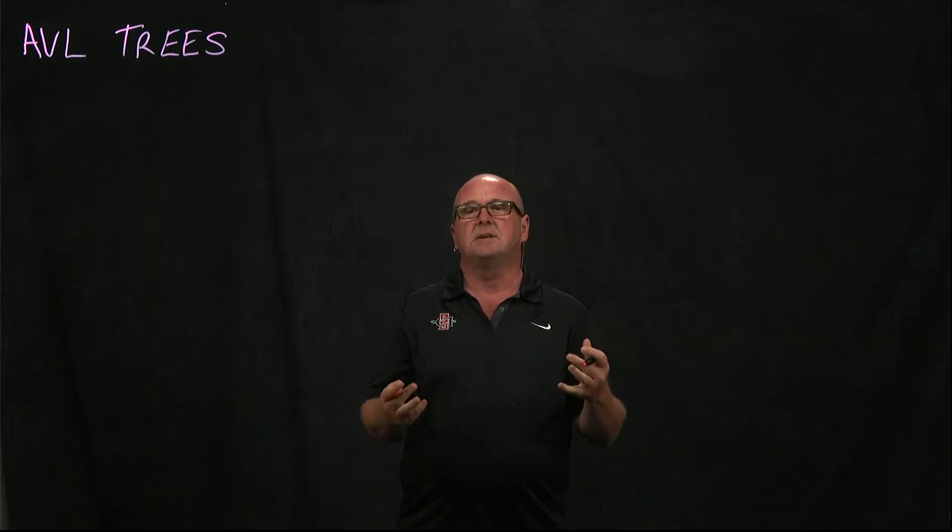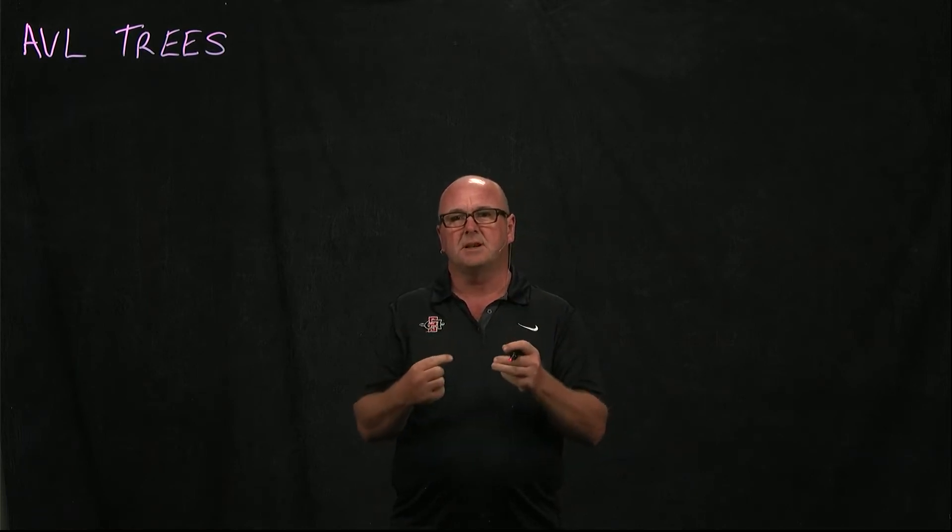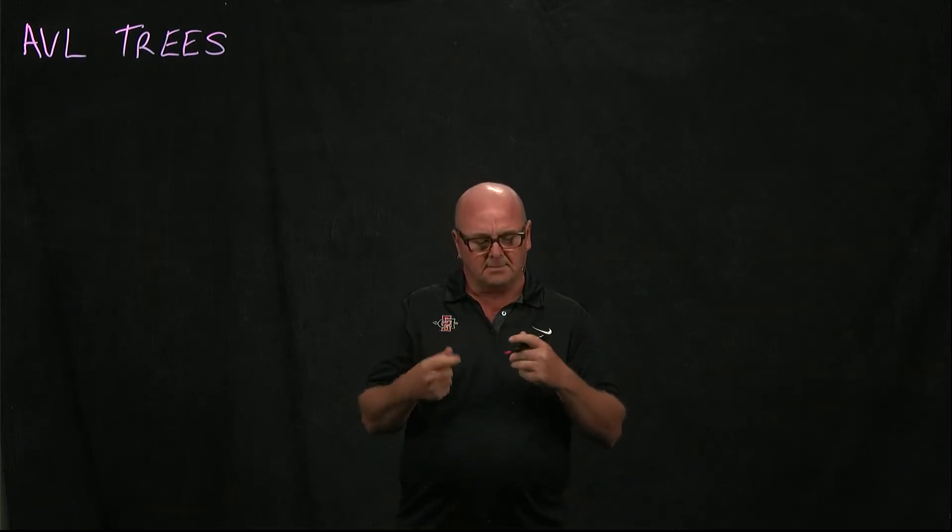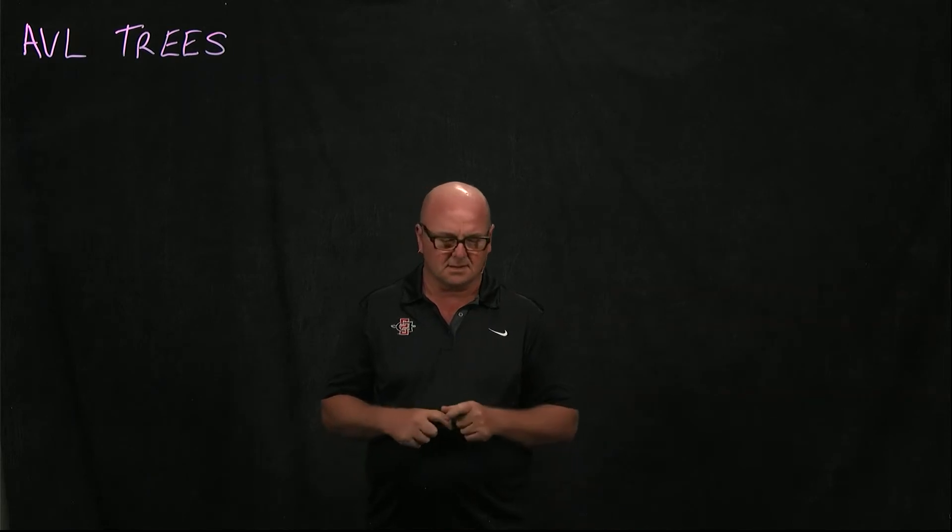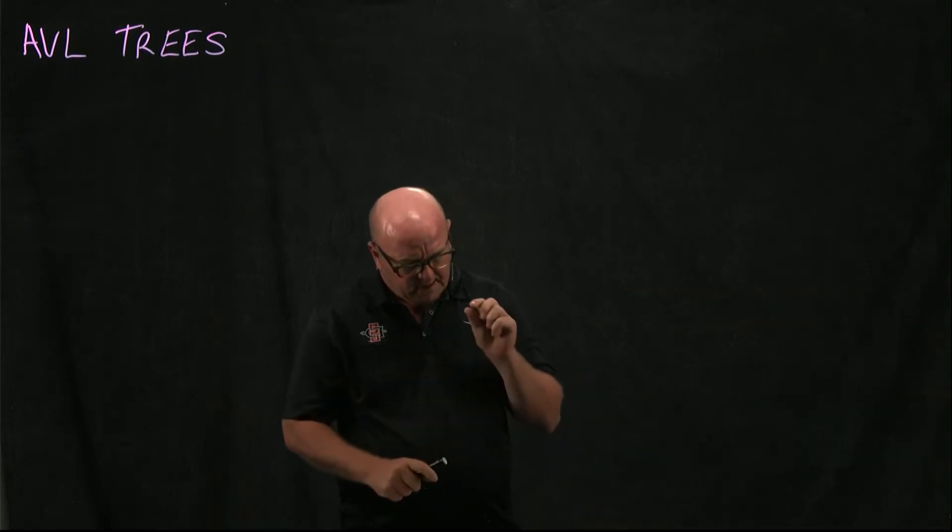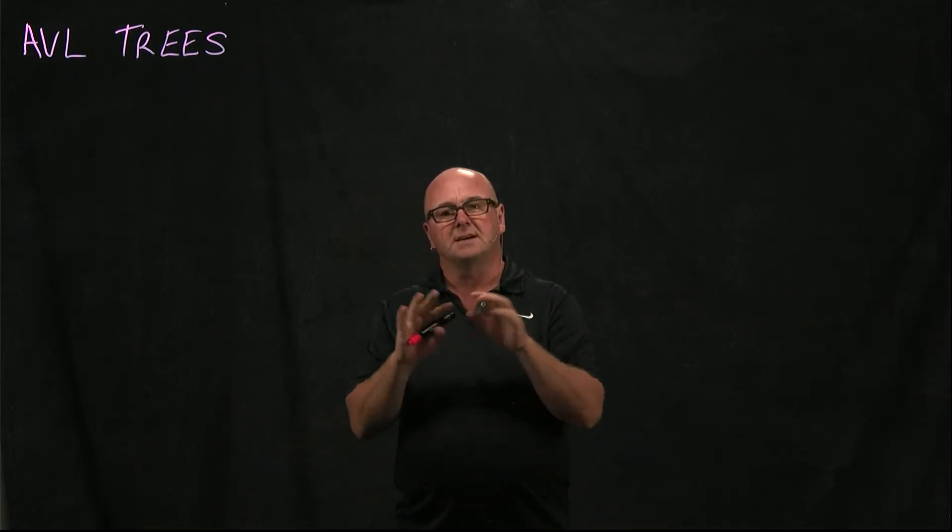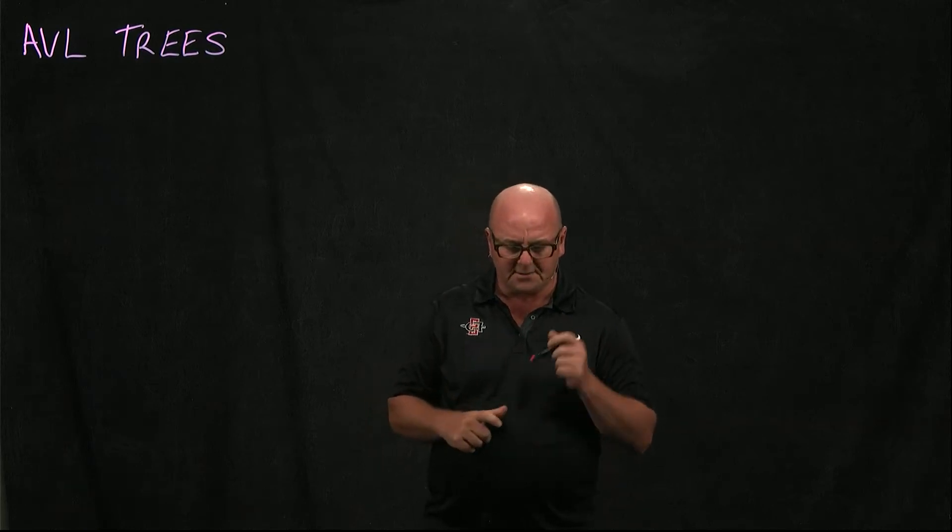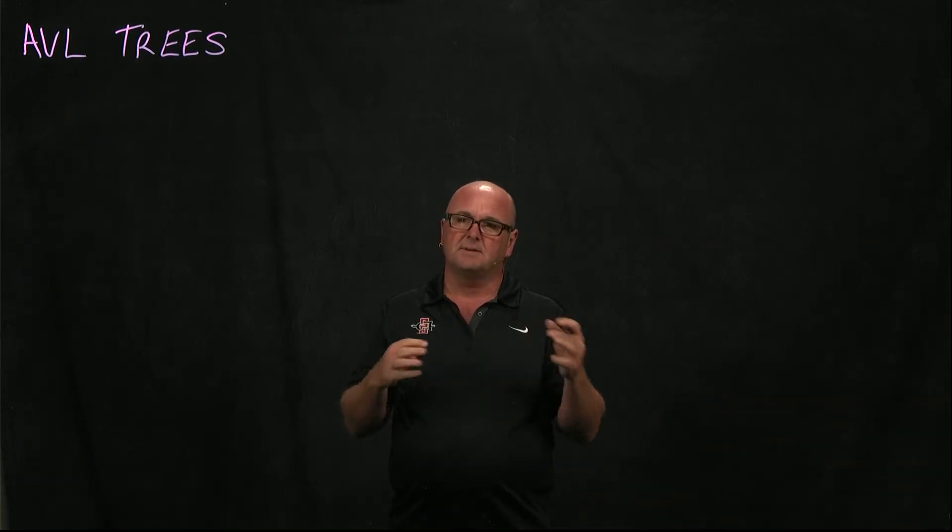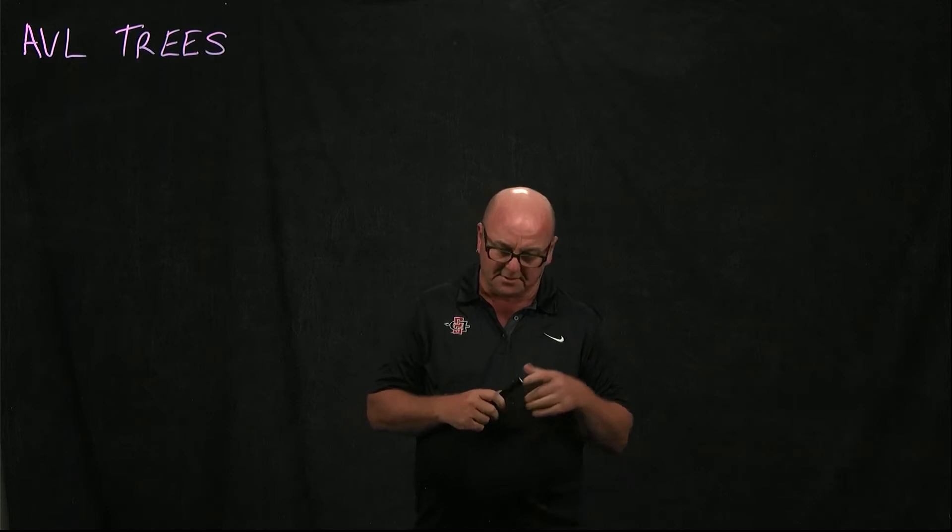We're going to start with our node class. This is the same node class that we've used in other situations. You've seen it before, but our AVL tree has two different children, so we're going to have a left and a right node that we're going to link to.